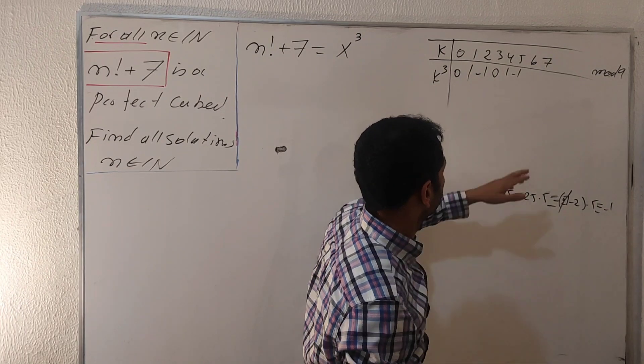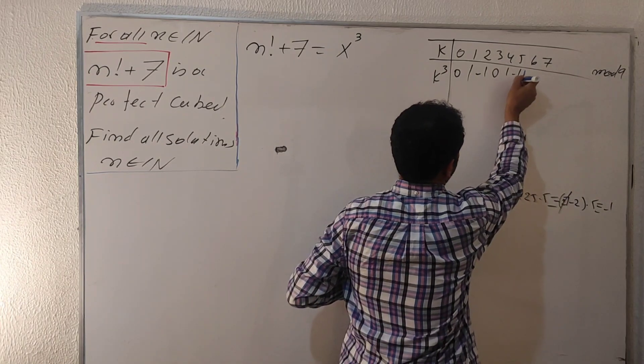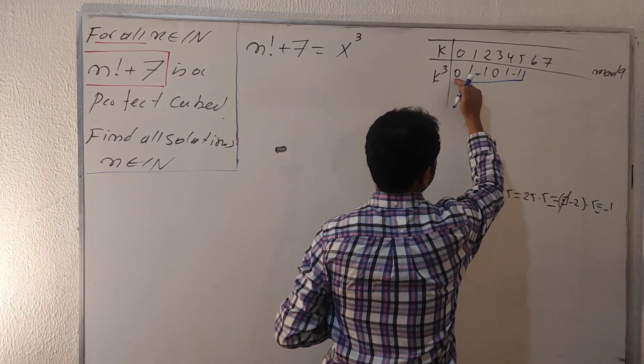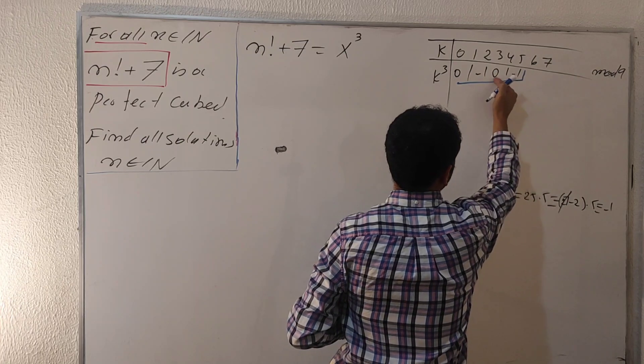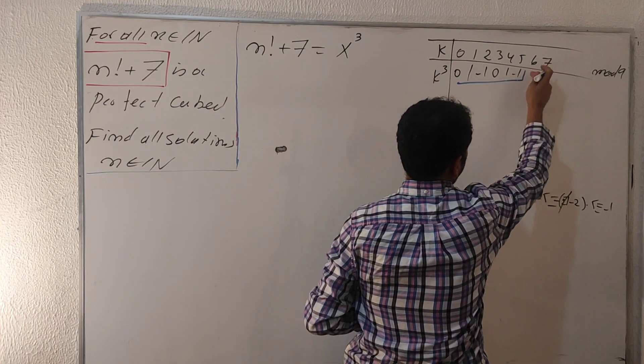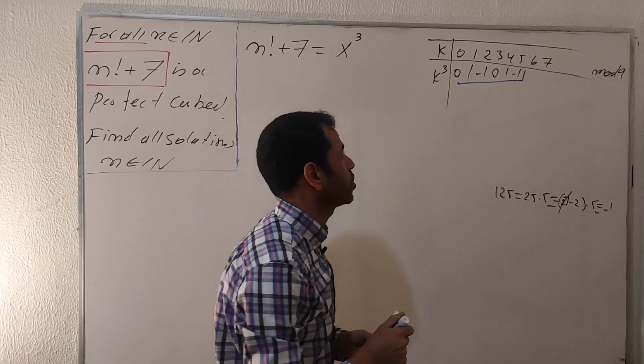We're going to stop here. This is enough because we have kind of a repeating pattern here: zero, one, minus one, zero, one, minus one. The next chunk will have the next part of these values: zero, one, minus one, and so on.